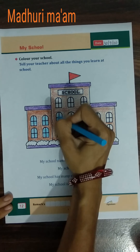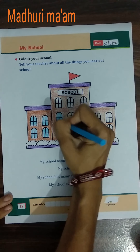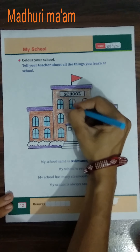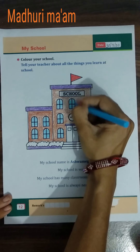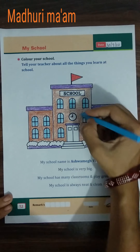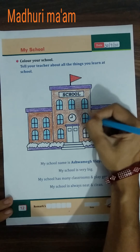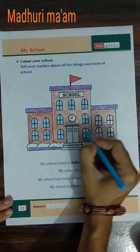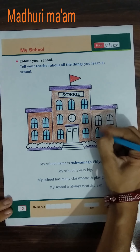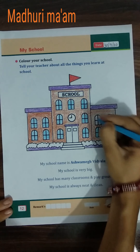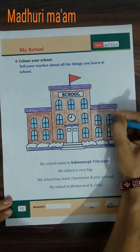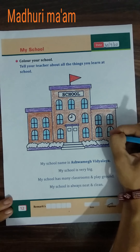Very good, and slowly slowly. Okay children, now we take next color. Which color do we use now? We use brown color. We will do the whole school in brown color. Okay, slowly slowly.